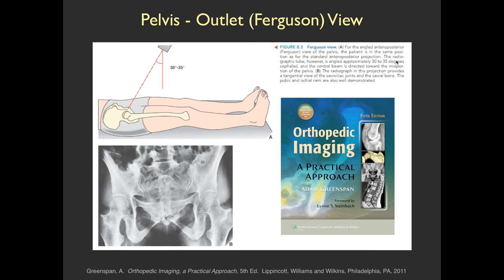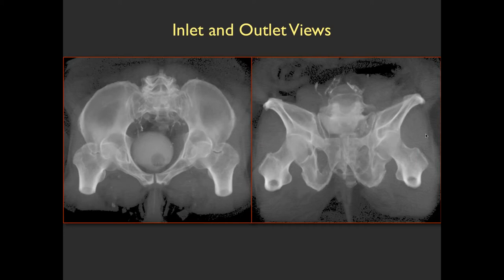The inlet and outlet views are also important. The outlet view, or Ferguson view, shoots obliquely and gives a nice AP view of the pubic bones and symphysis, allowing assessment of cephalad or caudal displacement. The inlet view gives a tangential view of the pelvic brim — you can imagine it like looking at the path a fetus would take entering the pelvis. These images are from the Greenspan book, which is a good resource for understanding how different views are taken.